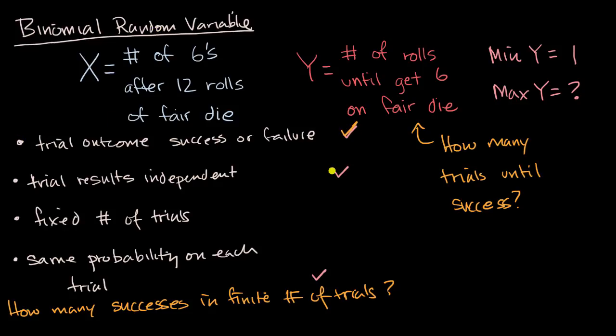But if we're meeting this condition, clear success or failure outcome, independent trials, constant probability, but we're not talking about the successes in a finite number of trials, we're talking about how many trials until success, then this type of random variable is called a geometric random variable.